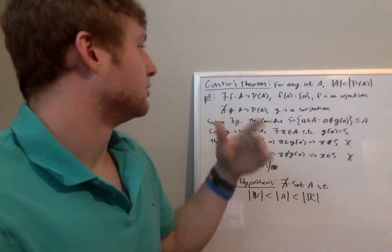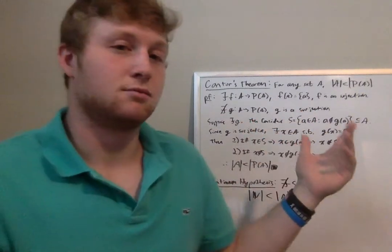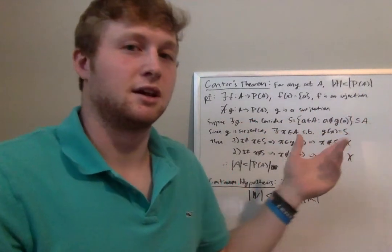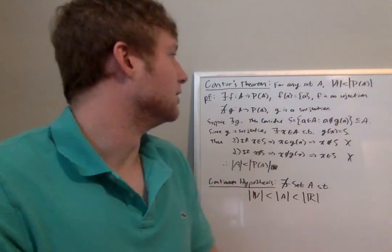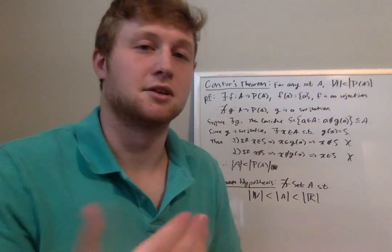We do that by first showing that you can establish an injection between any set A and its power set, which is simple—you just take the singleton of each element—and that you can't have any surjection from the set to its power set, which is a very interesting trick. We assume that there is a surjection.